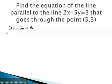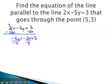We must solve it for y to put it in intercept form. Subtracting 2x from both sides gives us negative 5y equals negative 2x plus 3. Dividing both sides by negative 5, dividing every term by negative 5, gives us y equals 2 fifths x minus 3 fifths.